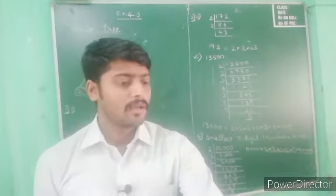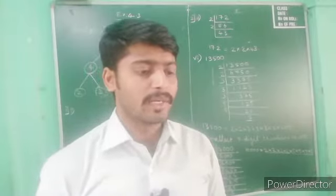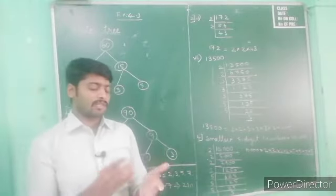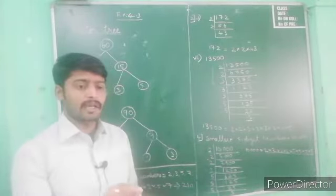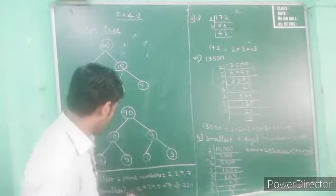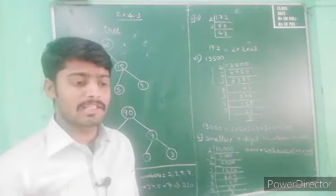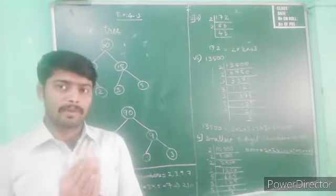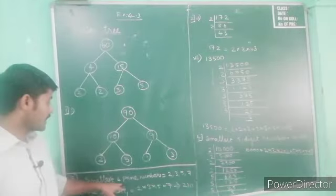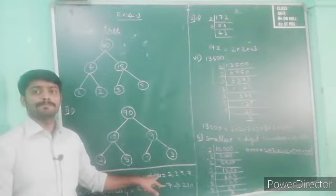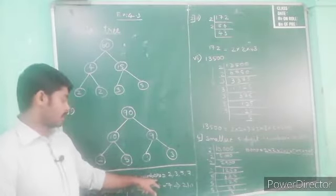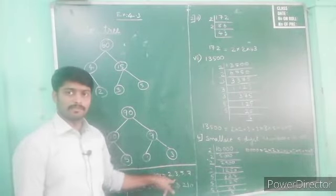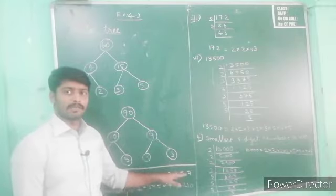The fifth question: I am the smallest number having four different prime factors. Prime factors means prime numbers starting with two, three, five, seven like that. It is asking for four different factors. The smallest number means it should have the smallest prime factors. So I am writing the smallest four prime numbers: two, three, five, seven. These are all the smallest four different prime numbers.